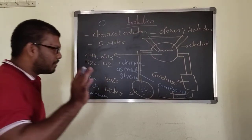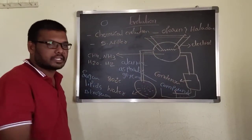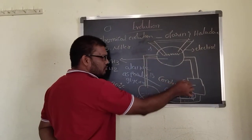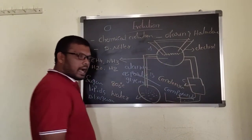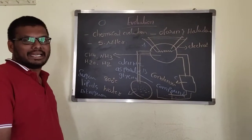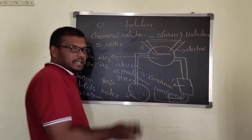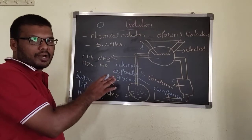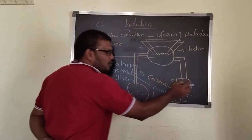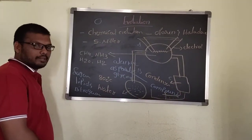In this experiment, remember the diagrammatic representation — this one is A, this one is B, and this one is C. Mostly they can ask what are the compounds taken in the spark chamber — that is very important. And also what is the use of the condenser — that is a very important point.